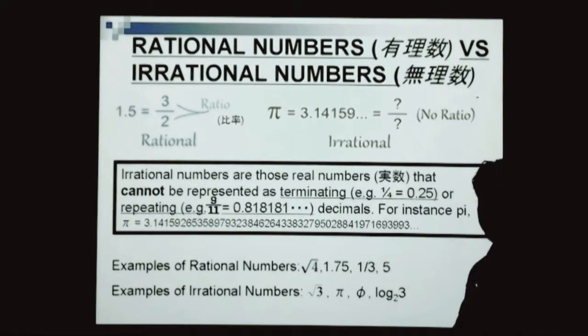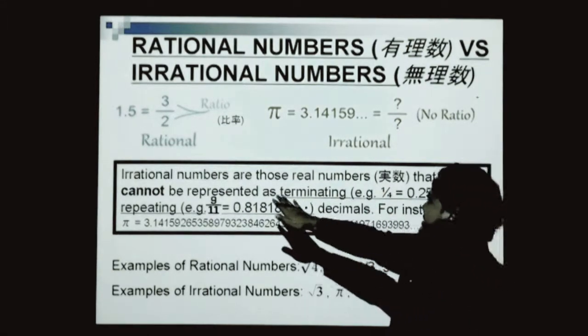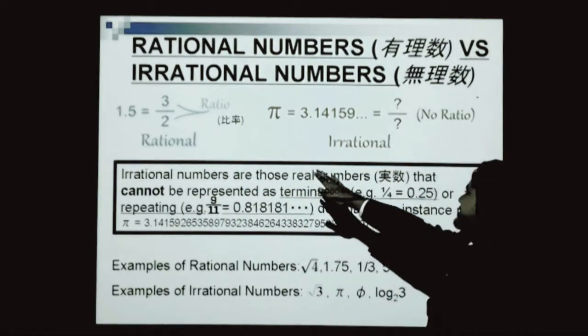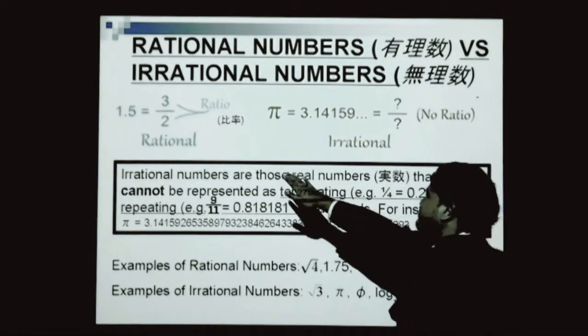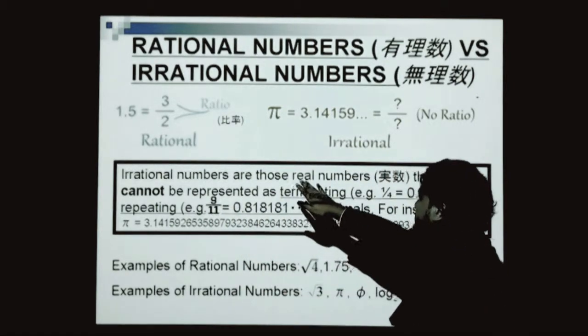Before we move on, what exactly is a rational number and what exactly is an irrational number? First of all, a rational number is simply a number that can be written as a ratio or a simple fraction.